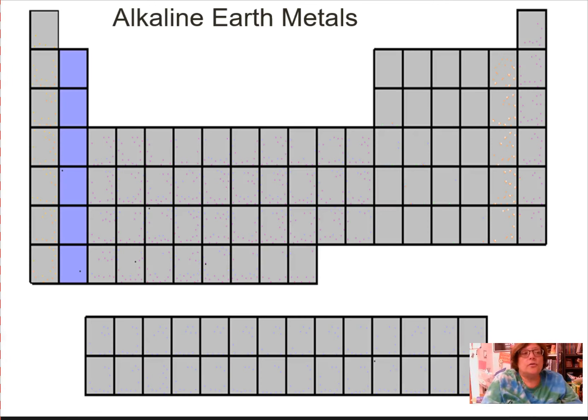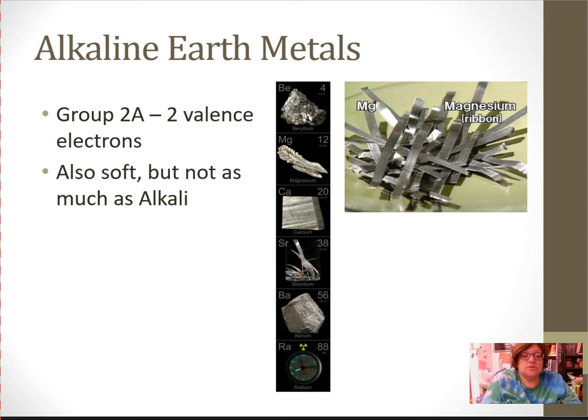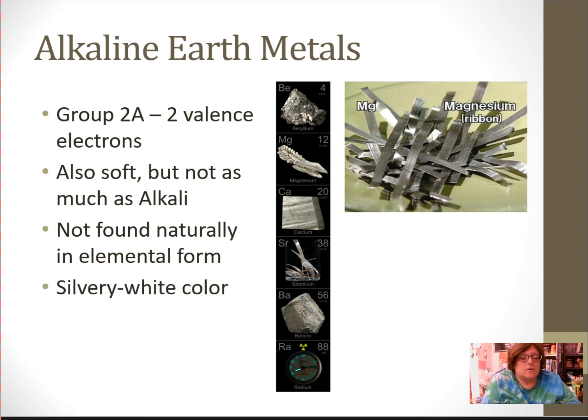Alkaline earth are next. The alkaline earth metals are group 2A. They have two valence electrons. They are also soft, but not as soft as alkali metals. They also are not found naturally in nature. They're only in compounds. They are silvery white in color, and they are somewhat reactive with water, and they form two plus ions. That means they give up two electrons.